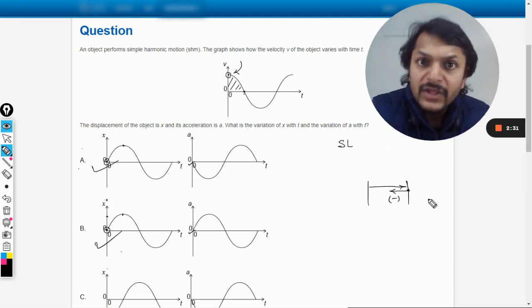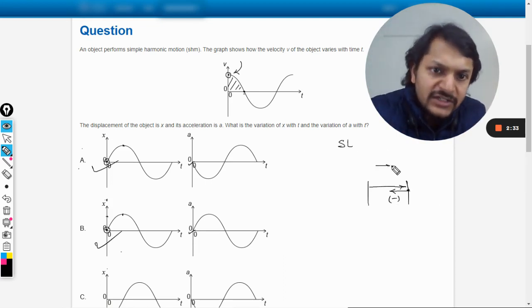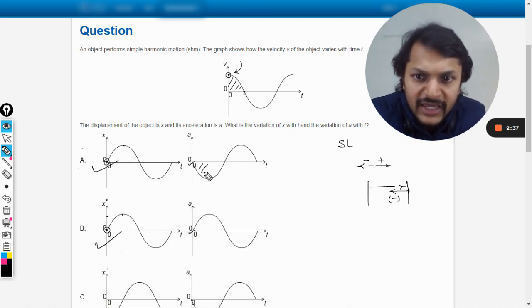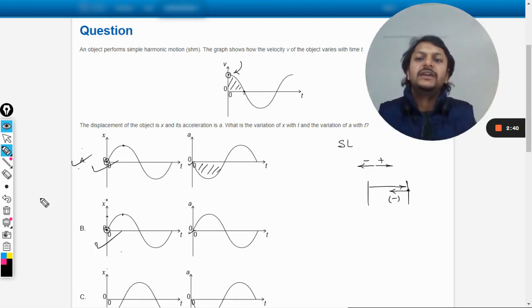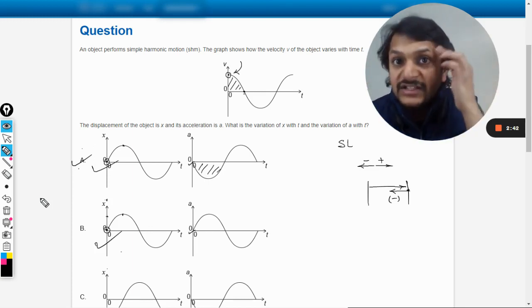Isn't it? Because we have taken this sign convention - this positive and negative. So actually it may be negative here. Only in this case the acceleration is negative. The answer will be A. So this is how we can just think, we can just imagine.